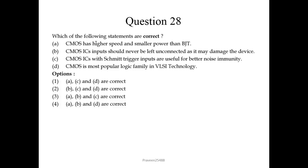Question number 28: which of the following statements are correct? CMOS has higher speed and smaller power than BJT — this is wrong, because BJT is used for high-speed switching and has higher speed than CMOS. CMOS IC inputs should never be left unconnected as it may damage the device — correct. CMOS ICs with Schmitt trigger inputs are useful for better noise immunity — correct. CMOS is the most popular logic family in VLSI technology — also correct. So B, C, and D are correct; the second option is correct.